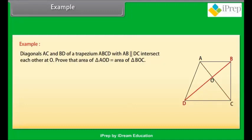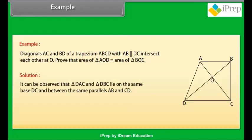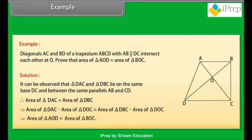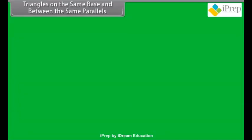Example: Diagonals AC and BD of a trapezium ABCD with AB parallel to DC intersect each other at O. Prove that area of triangle AOD is equal to area of triangle BOC. Solution: triangles DAC and DBC lie on the same base DC and between the same parallels AB and CD. Therefore, area of triangle DAC equals area of triangle DBC, which implies area of triangle DAC minus area of triangle DOC equals area of triangle DBC minus area of triangle DOC, which implies area of triangle AOD equals area of triangle BOC.